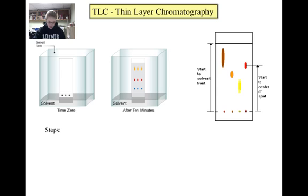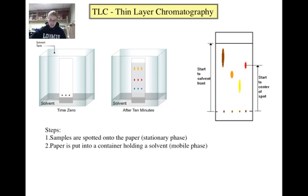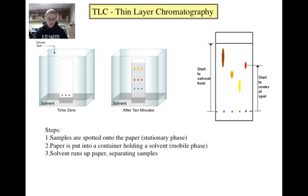First, the unknown amino acid samples are spotted onto a piece of paper. The paper is known as the stationary phase, as it doesn't move. The paper is then inserted into a chamber holding the solvent, which is known as the mobile phase. The solvent migrates up the paper as a result of capillary action. If the solvent is polar, for example, any polar amino acids will dissolve into it to be carried for a longer distance than any nonpolar amino acids. The more polar amino acids will be carried a farther distance than the less polar amino acids. In this way, the samples of amino acids get separated.